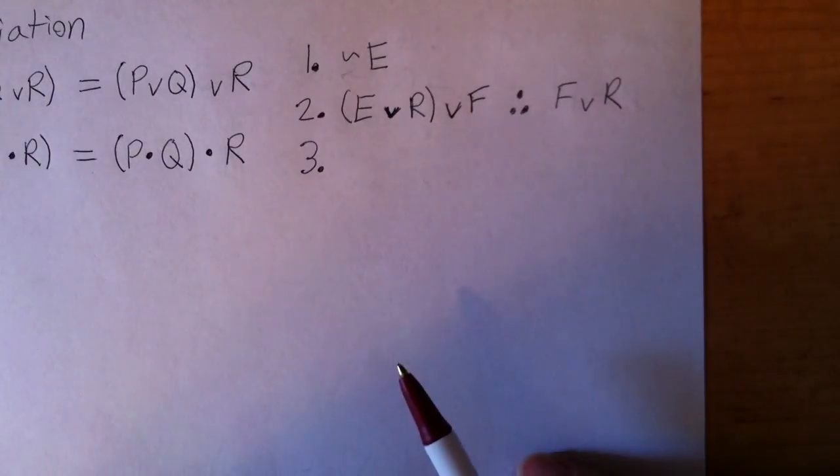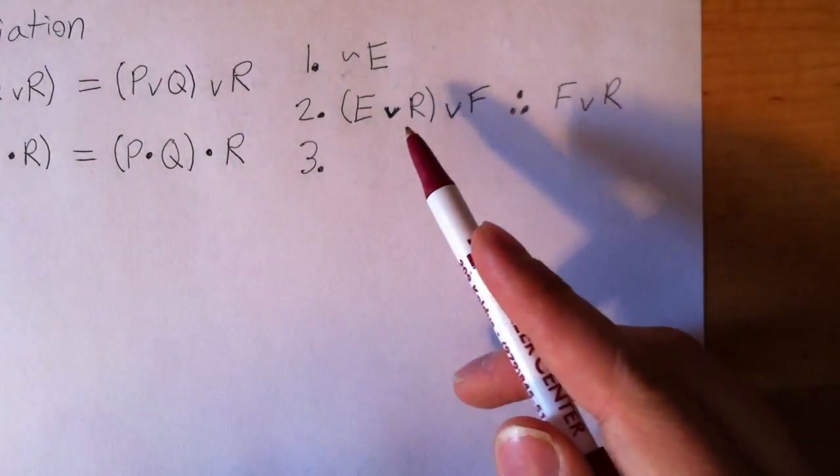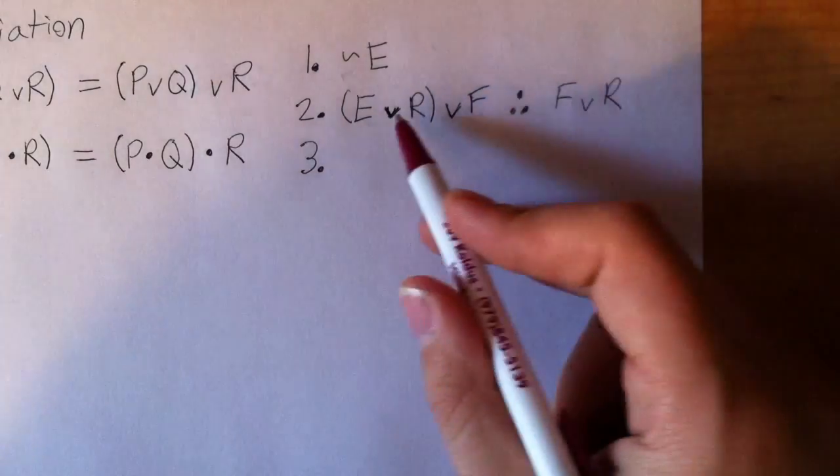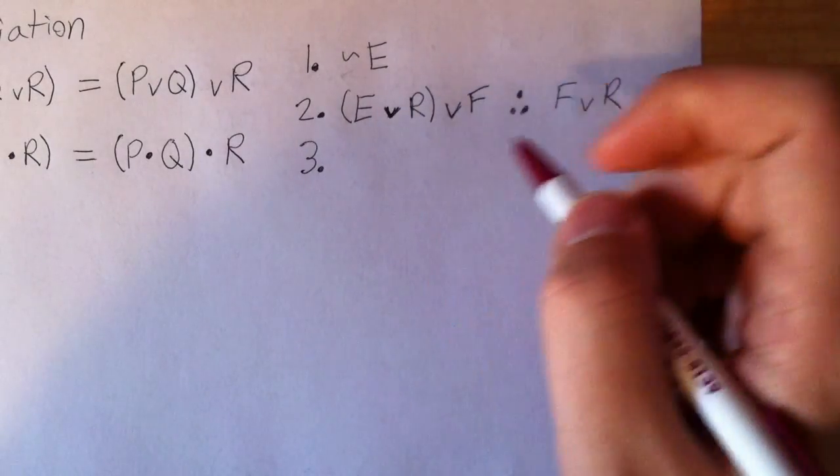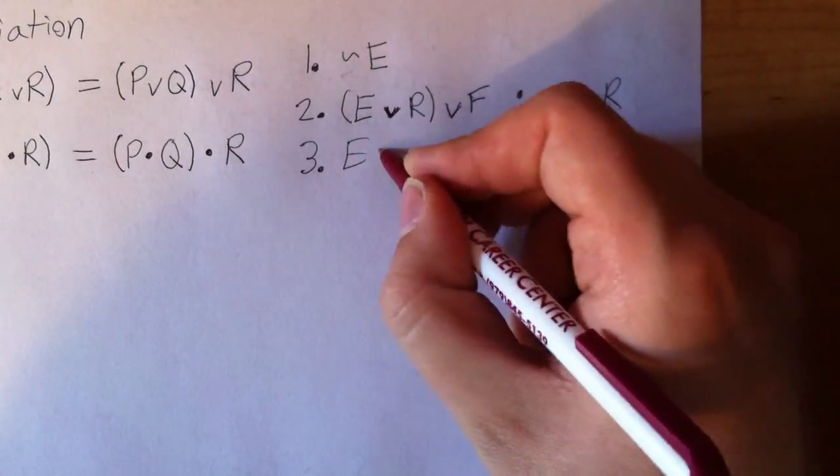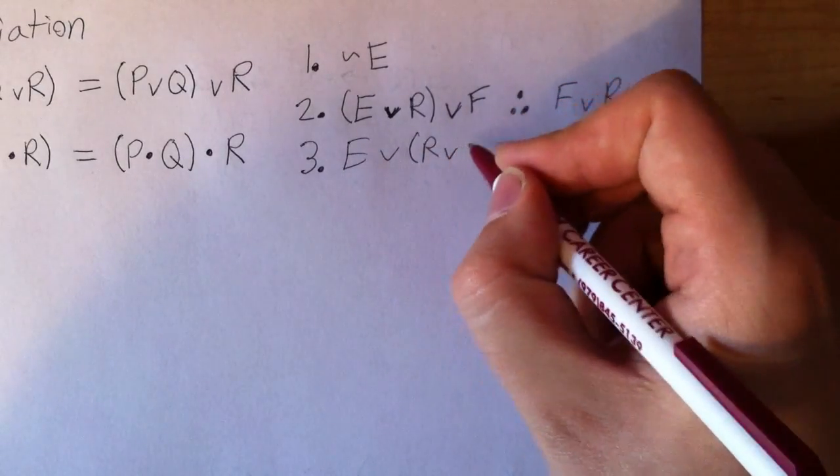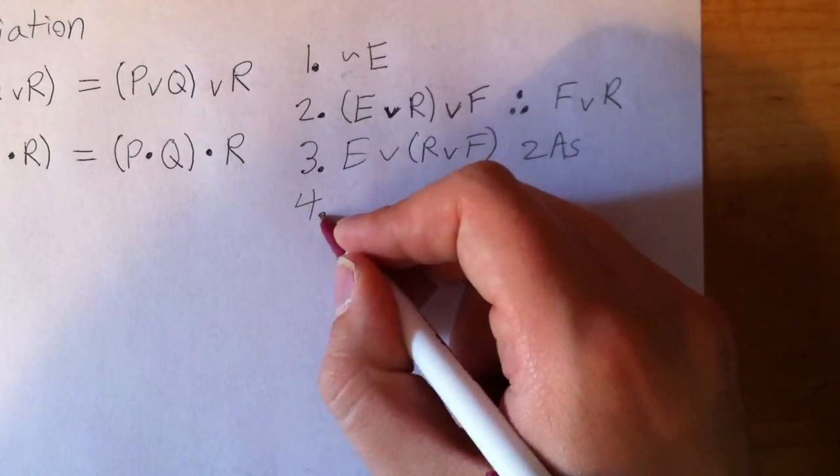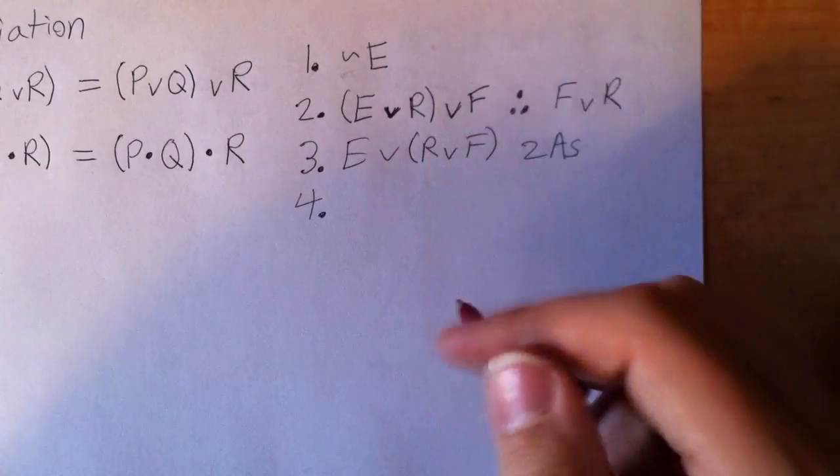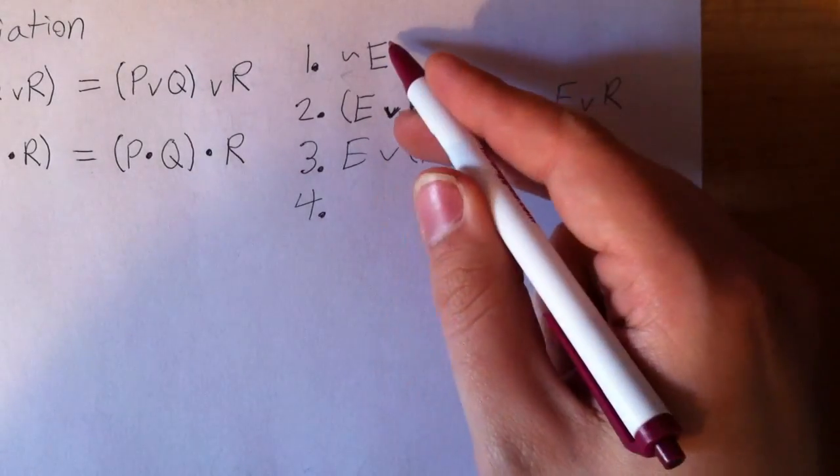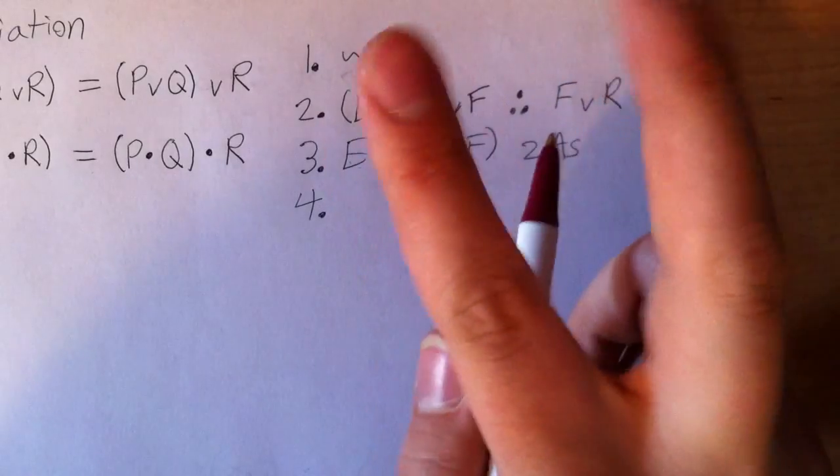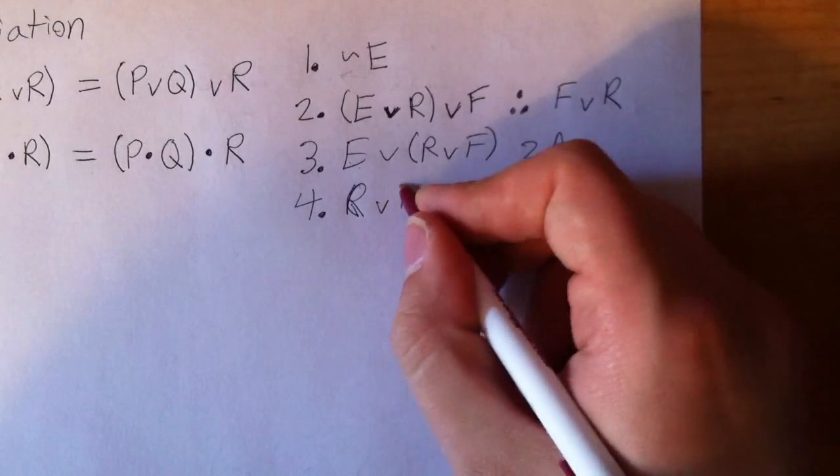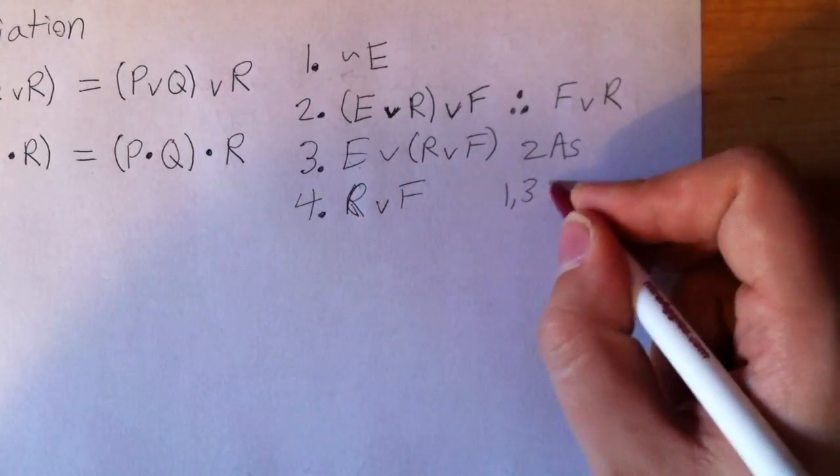So let's see what that looks like in a proof. Well, I see that I've got a match for association. Again, you don't always know how it's going to wind up, but you know you see you've got that match. So let's see. I'm just going to go ahead and try it out. Slide the parentheses to the right, and I can get E wedge R wedge F. See, I just slid the parentheses around. Two, AS. Well, now I've got a match for DS. Lines 1 and 3. So that and that cancel out. And let me have, if I can get rid of the parentheses, R wedge F. Lines 1, 3, DS. So I'm done now. I've got the conclusion? Not quite.